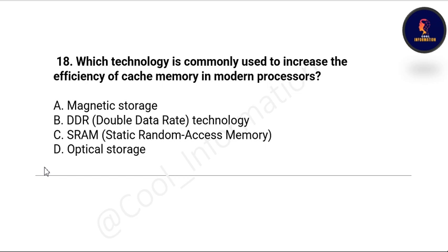Next question: which technology is commonly used to increase the efficiency of cache memory in modern processors? The concept of cache memory is very important. Options are: magnetic storage, DDR technology, SRAM, and optical storage. The correct option is C — SRAM.